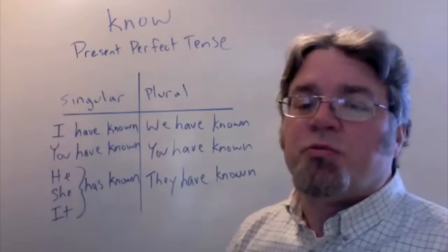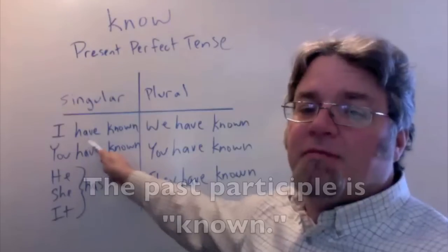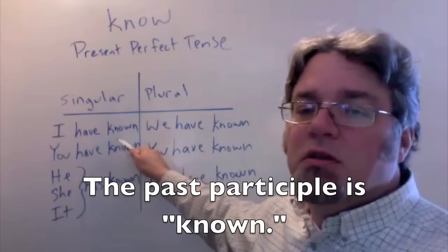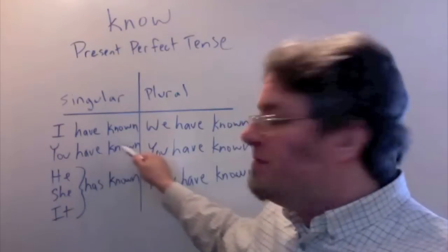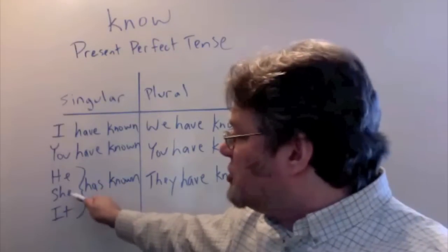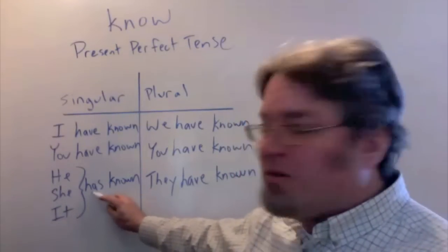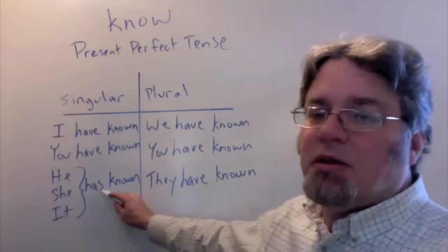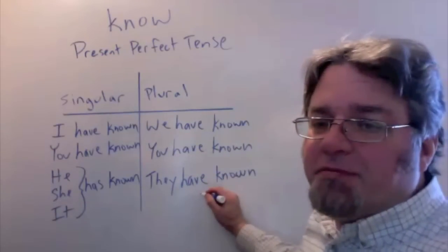Here's the present perfect tense. In the singular form, I have, and then the past participle is known. I have known, you have known. But here in the singular third person, he, she, it has known. Notice the helping verb here is h-a-s. And then for the plural: we have known, you have known, and they have known.